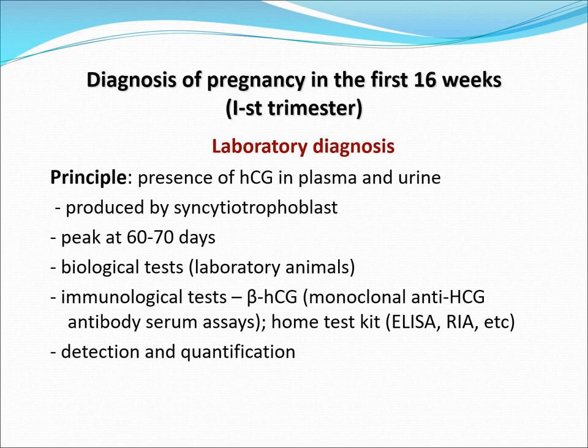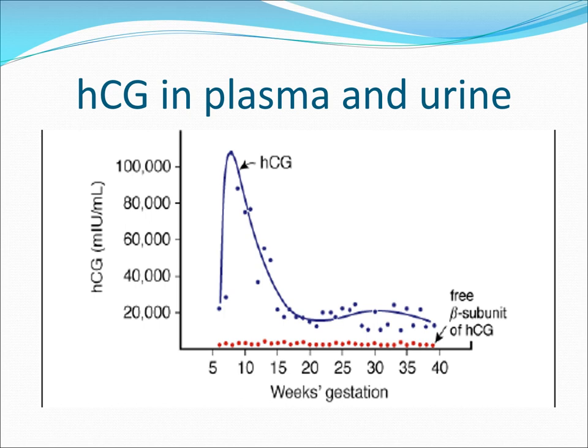Laboratory diagnosis, in general, would be the presence of HCG in plasma and urine. This is produced by your syncytiotrophoblast, which peaks at 60 to 70 days. Biological tests and immunological tests could also be used to detect and quantify HCG. In plasma and urine, according to weeks of gestation, it would increase starting at 5 weeks, would peak at around 10 weeks, and would decline rapidly at around 15 to 16 weeks.